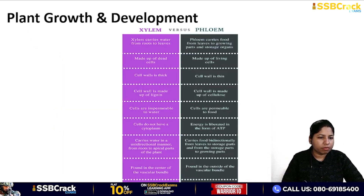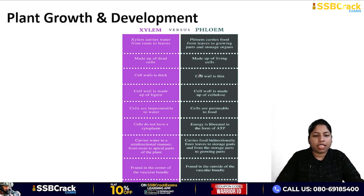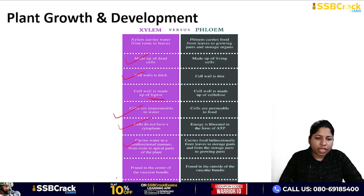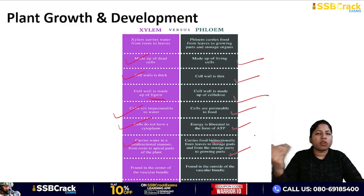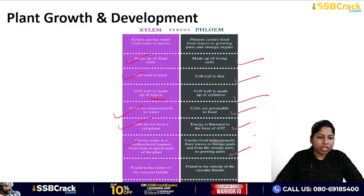In the comparison between xylem and phloem: xylem is made up of dead cells, cell wall is thick, lignin deposition occurs, cells are impermeable to water, no cytoplasm, and movement is unidirectional. Phloem has living cells, thin cell wall made of cellulose, permeable, energy is released in the form of ATP, and carries food bidirectionally — from leaves to storage parts and from storage parts to growing parts.